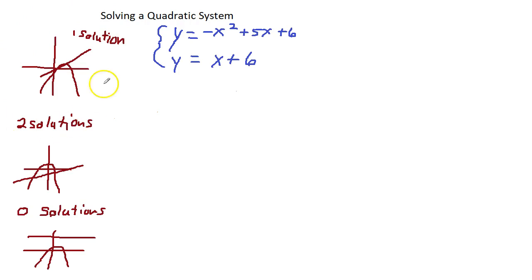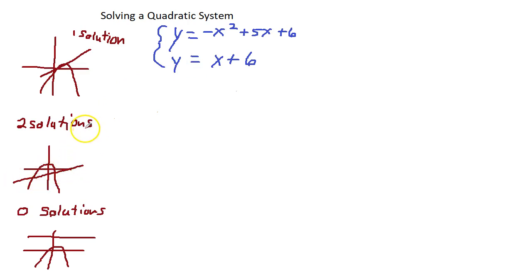If we were to have one solution, our line would just touch the parabola. If we were to graph this and solve it by graphing, our line would go through it twice for two solutions. And zero solutions would be where the line would not cross the parabola at all. So we're going to solve this algebraically so we can see which type we would have.